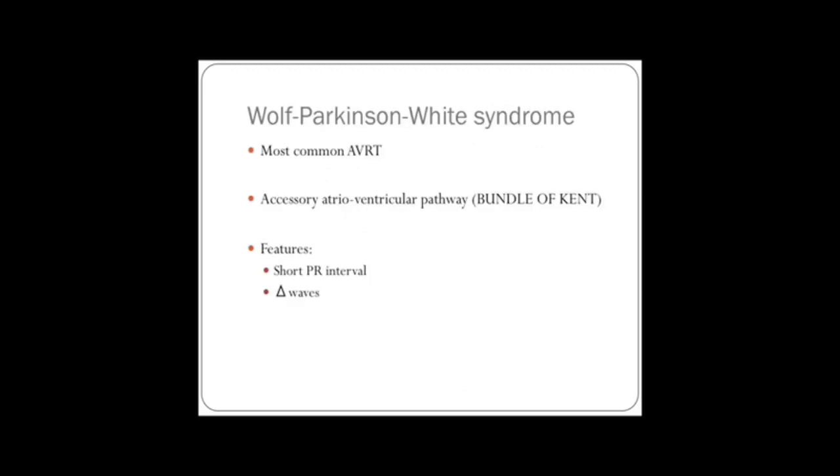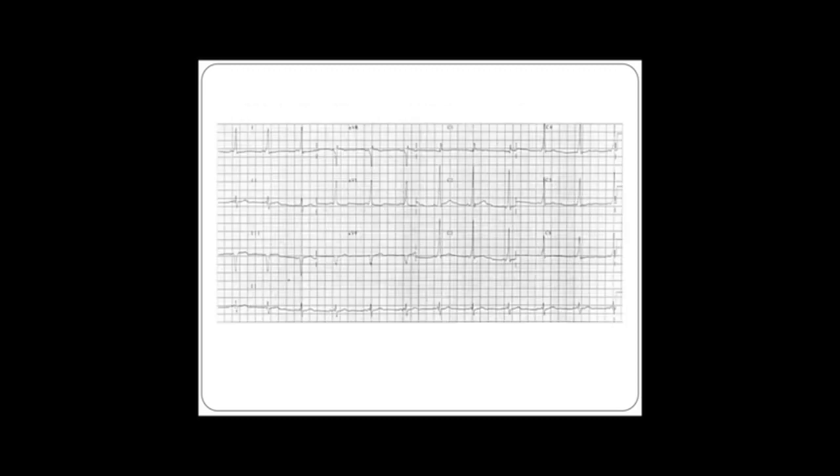And there's only two features you need to know. There's a short PR interval and you get a slurred upstroke to the QRS complex, which gives the QRS complex the appearance of a delta shape, the Greek delta shape. That's called a delta wave. And here's an example. If you just look at lead one, you can see that the P to QRS is short. And if you look, I think this is a good example. This wave here in V3 looks quite a lot like a delta. So just remember those two features.